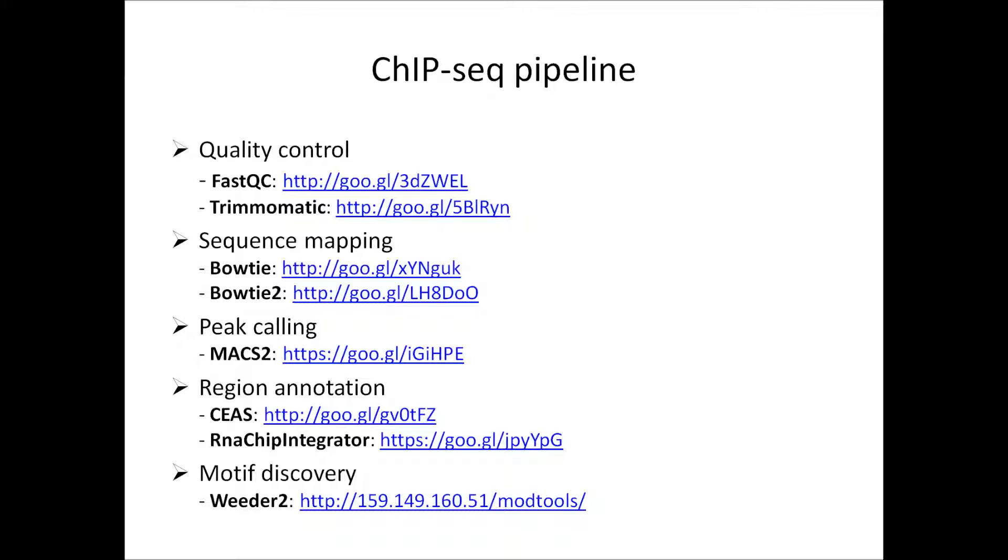In the peak calling stage we are looking to identify areas of the genome that have an abundance of ChIP sequence reads compared to input or background reads. I'll make a distinction there later. MACS2 is particularly popular but there are other peak callers available.